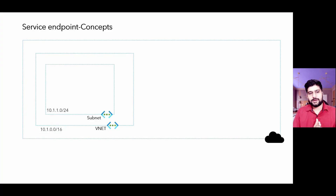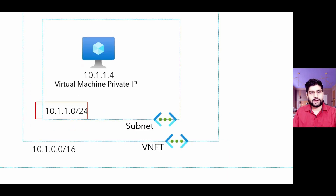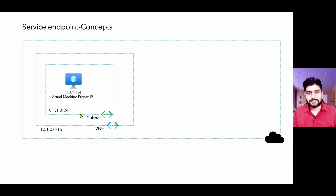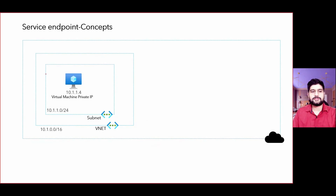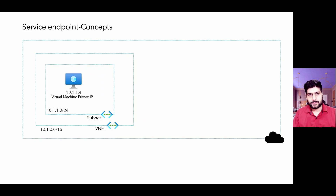Within this subnet, you have a virtual machine available. The subnet range is 10.1.1.0/24, so you have around 256 IPs. The first IP available in Azure is assigned to your VM — that's 10.1.1.4. Now what you want to do is connect this virtual machine with some PaaS offering from Microsoft, for example a storage account.